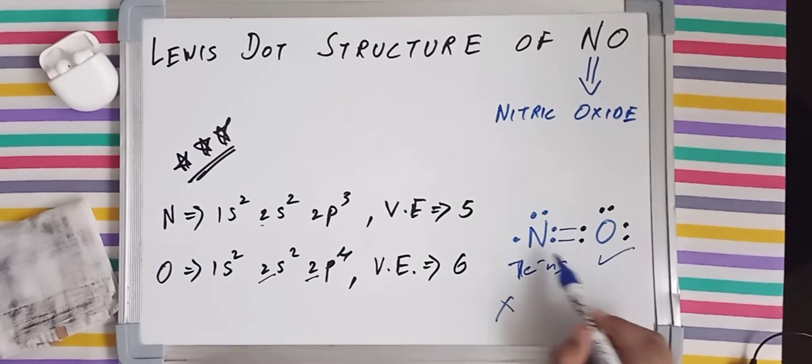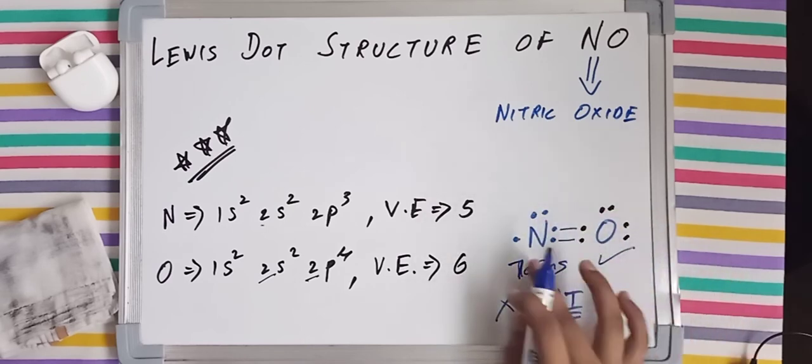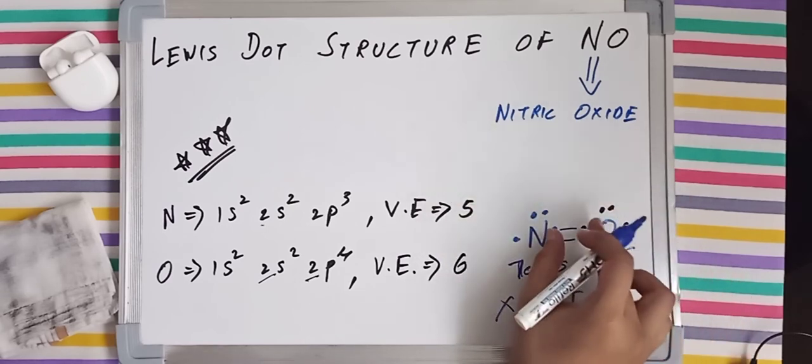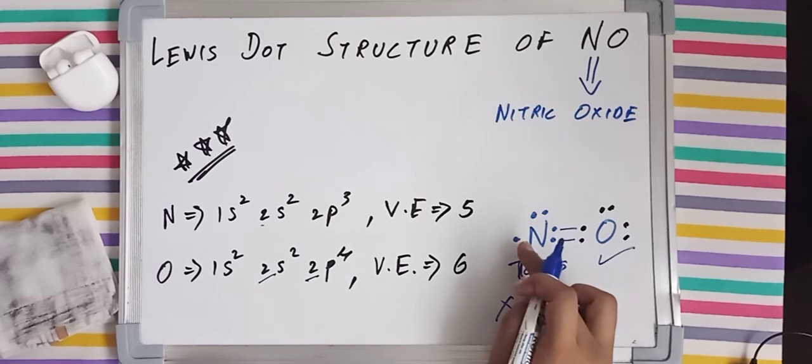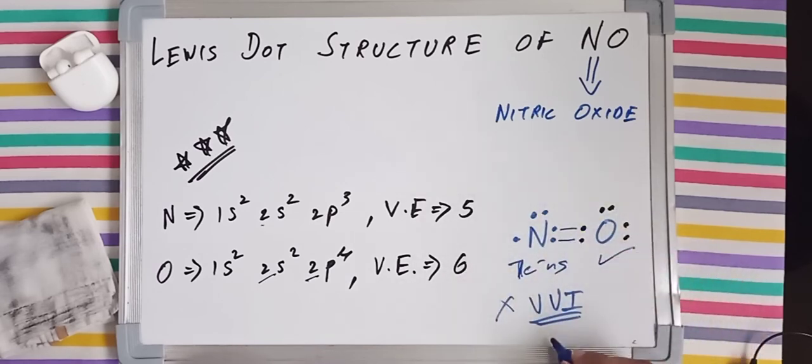So it is very important, very very important that you memorize this structure. Always remember that in nitric oxide there are two double bonds between nitrogen and oxygen, and the rest you'll be able to draw the electrons. So memorize this one.